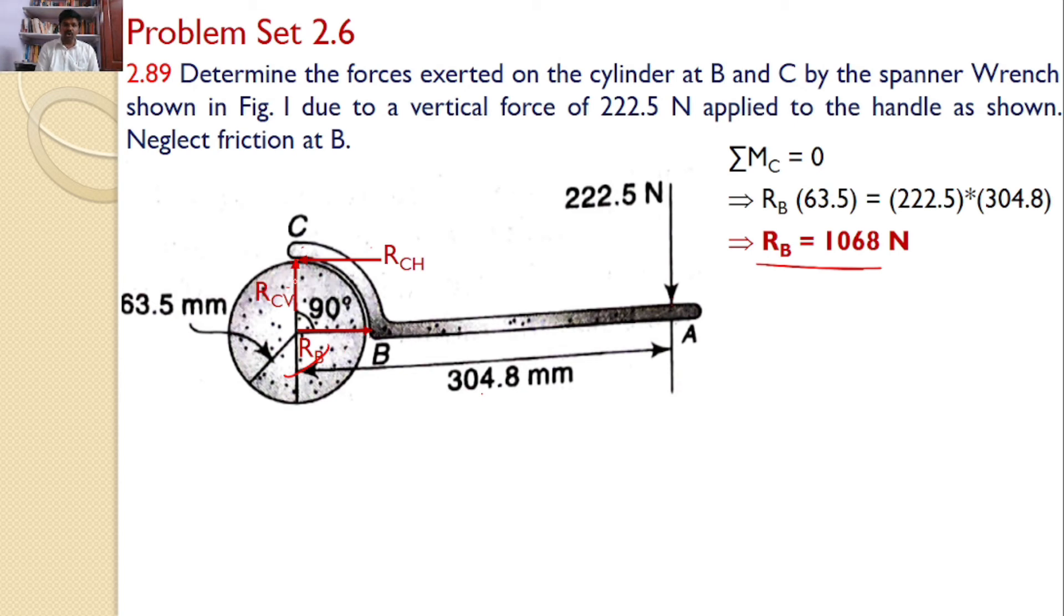Next, to find the reaction at C, I will use the other equilibrium equations. Sigma FX equals 0: there are only two forces acting along x-axis in opposite directions, hence RCH equals RB, which is 1068 Newtons. And sigma FY equals 0: there are only two forces acting along y-axis in opposite directions, so RCV equals 222.5 Newtons.